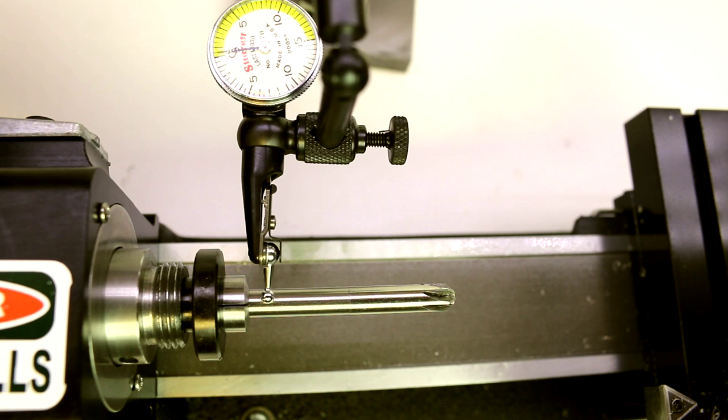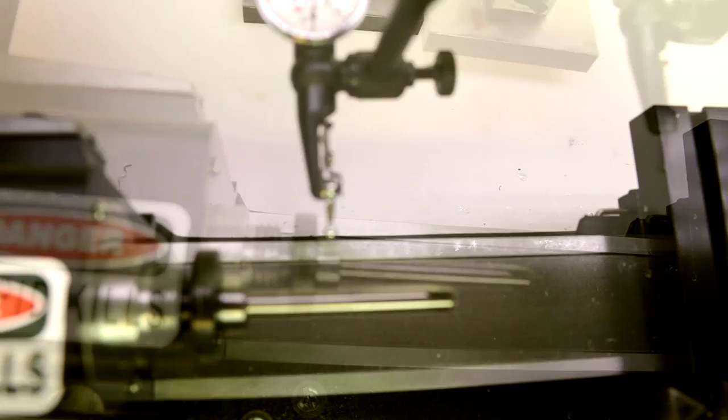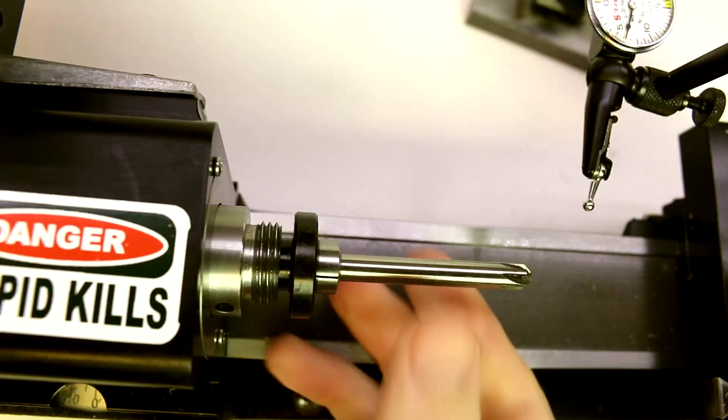By purchasing a full set of these WW collets from Shearline runs north of $900 just for the collets. But if you do some particular sizes, you know, if you work on a lot of 1/4 inch or 1/8 inch pieces, then this is going to provide you a quick and easy method of holding those small pieces and getting very precise, very accurate repetition on them.